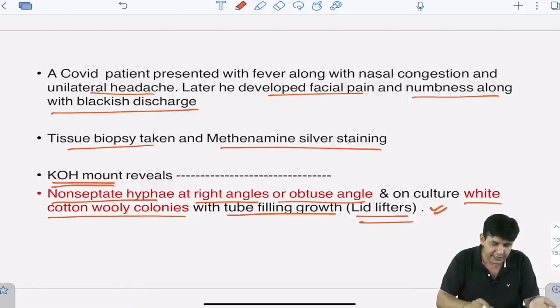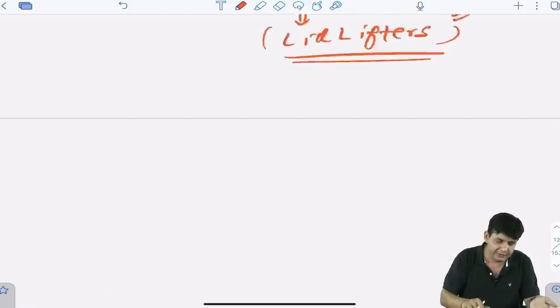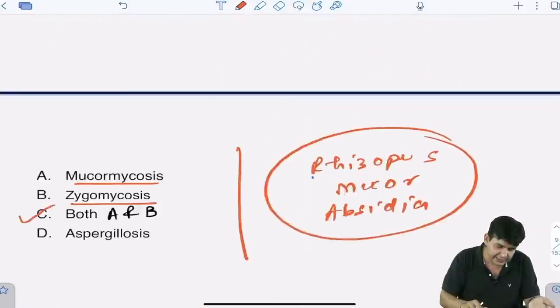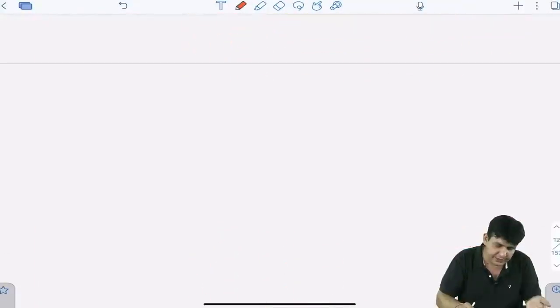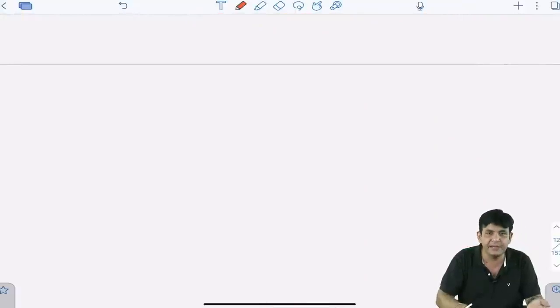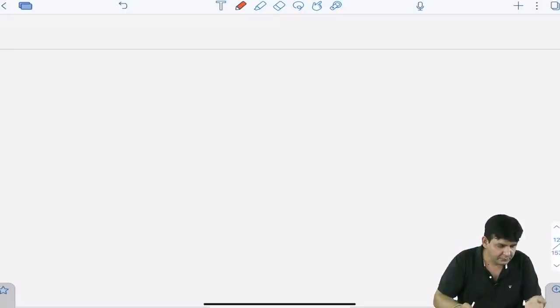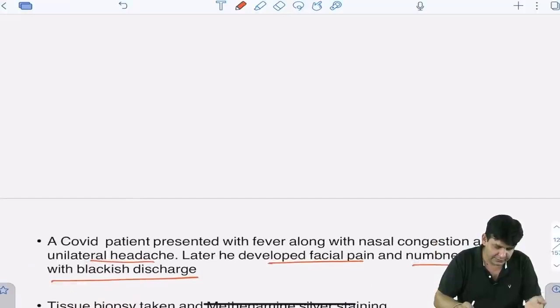I have already discussed this, but try to answer with some attention: Mucor and zygo are the same things. It's being named as black fungus, and it is not right to say 'black fungus.' I suppose I made myself clear. Aspergillus and all we will discuss later.